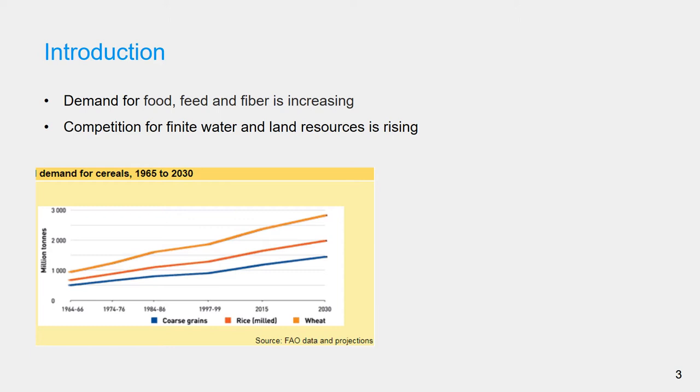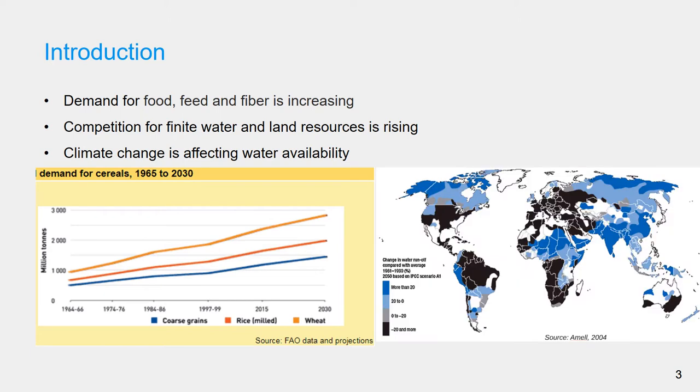On the other hand, climate change is affecting water availability, and soil degradation is reducing land productivity. Thus, the need to increase land and water productivity is inevitable.